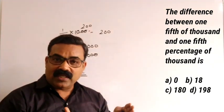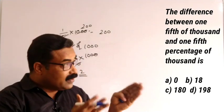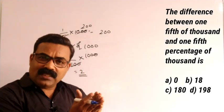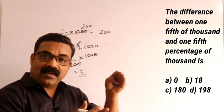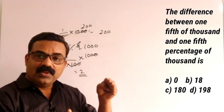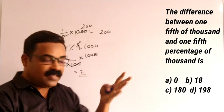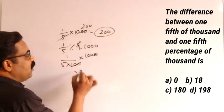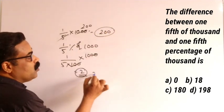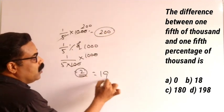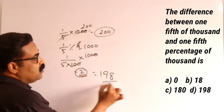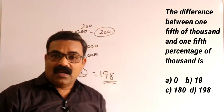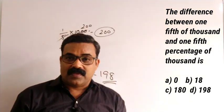What we need to find out is the difference between these two values. The difference between 200 and 2 is 198. So the difference between 200 and 2 is equal to 198, and 198 is the correct option from the given options.